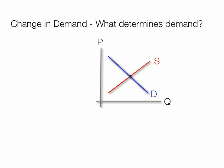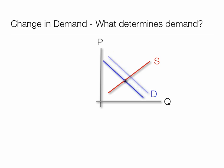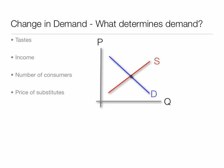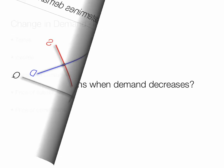When we look at the demand curve and talk about a change in demand, we refer to a shift in the entire curve up and down. Taste impacts demand, income impacts demand, number of consumers, the price of substitutes, and the price and availability of complements all determine demand.